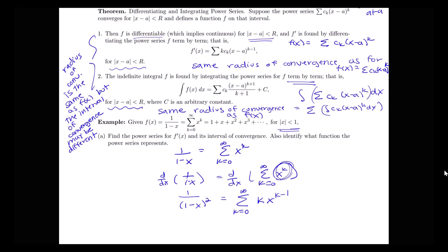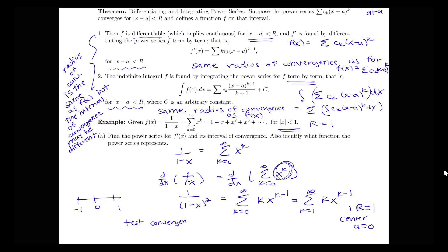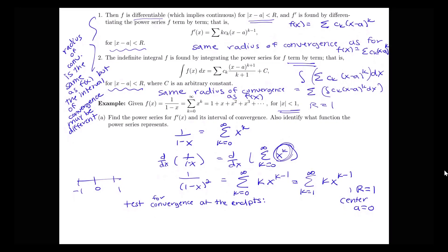Notice that when I plug in k equals 0, that first term is just 0, so I can re-index this and write it as the sum from k equals 1 to infinity of k times x to the k minus 1. Our original function had a radius of convergence of 1, so this still has radius of convergence 1, still centered at a equals 0. The interval will go from negative 1 to 1, so we need to test convergence at those endpoints separately, since we don't know if the interval of convergence will be the same.